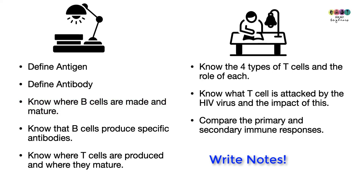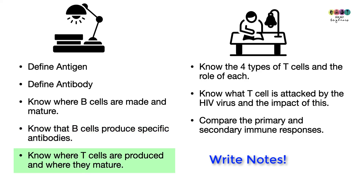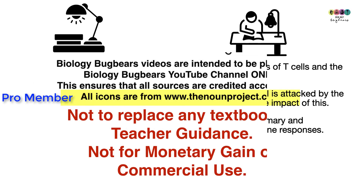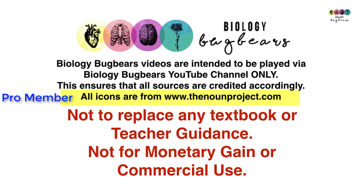At the end of this, make sure you can define antigen and antibody, know where B cells are made and where they mature, know that plasma cells produce specific antibodies, know where T cells are produced and where they mature, know the four types of T cells and what each does, know which T cell is attacked by HIV and the impact of this, and be able to compare the primary and secondary immune responses. Best of luck — remember to use your book and write good notes.